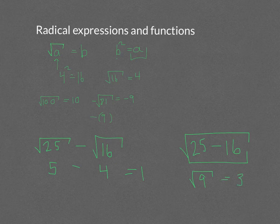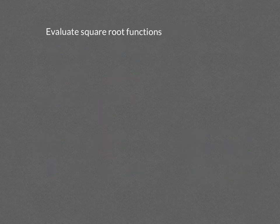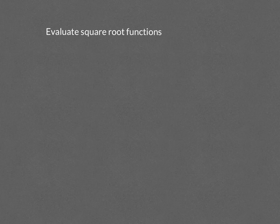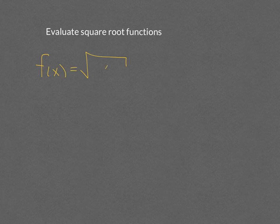The square root of 9 is 3. Now that we have a grasp of what square root means, we're going to look at square root functions. A square root function is something like f(x) equals the square root of x. One key property is that you can never have the inside of your square root be negative; the inside must be positive.